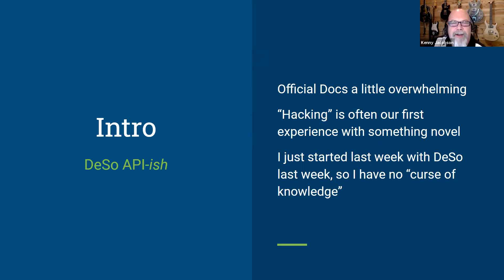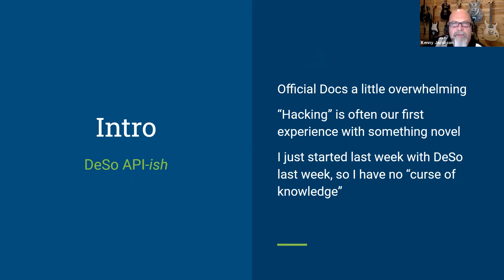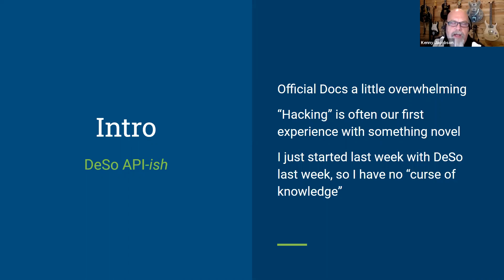My immediate instinct was to go to the official documents about the API and how you run your own node, but I found I was pretty overwhelmed with that. From comments and the Discord channel, there are probably others like me. I spent the better part of last week hacking around, inspecting code, watching network calls, and trying to figure out what was going on. I just started a week ago, so I don't have the curse of knowledge — I'd say I have the blessing of ignorance.